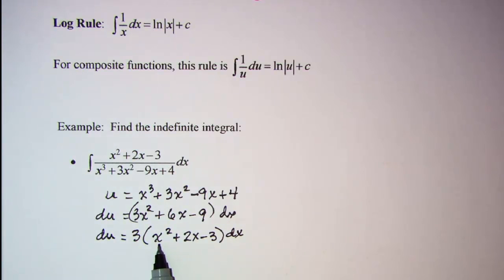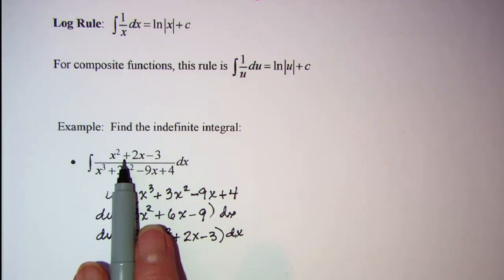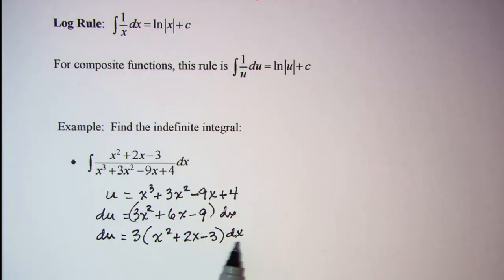So du equals 3 times x squared plus 2x minus 3 dx. Now we can see that x squared plus 2x minus 3 is in the numerator, and we have the dx. I need to get this 3 over with the du. So dividing both sides by 3, we have 1/3 du equals x squared plus 2x minus 3 dx.